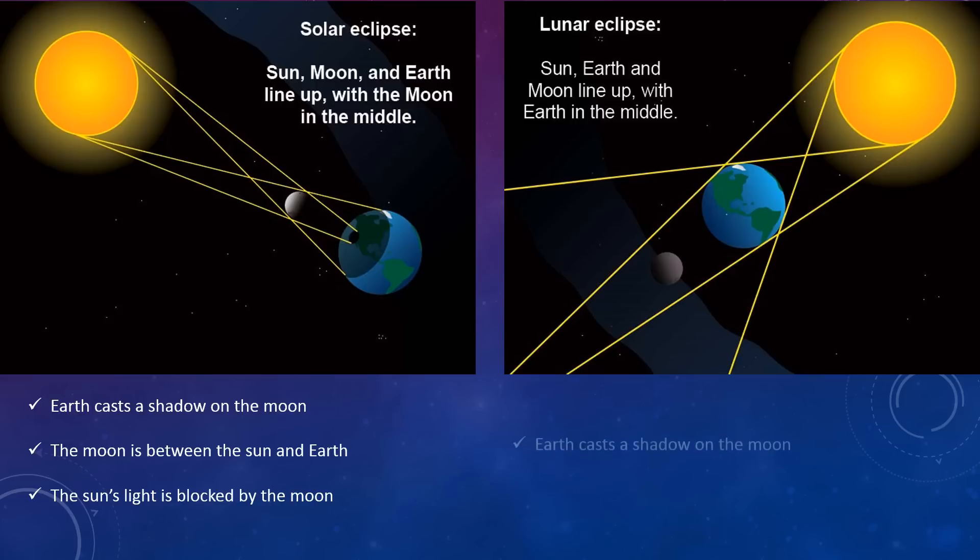The lunar eclipse, Earth still casts a shadow on the moon, but the moon's in a different spot. On the lunar eclipse, Earth is between the moon and the sun. So they're in a different position. And then on the lunar eclipse, the full moon becomes dark from Earth's shadow. So where the moon is now in the lunar eclipse, it normally would be a full moon. But because it is right in line with the sun and also the Earth, the Earth casts a shadow and creates it to have a lunar eclipse.